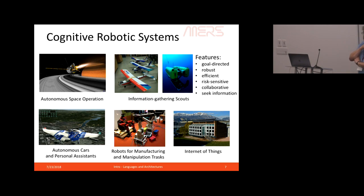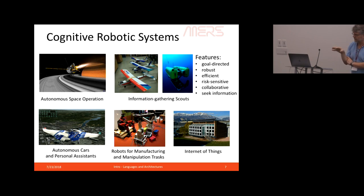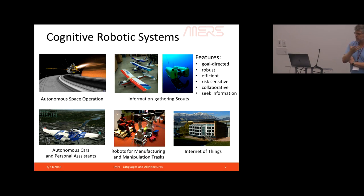The top-level goals come from the human — the operator, user, or programmer. One planner will sketch things out at one level of abstraction and call other planners to elaborate. The architecture ends up being a hierarchy of planning systems at many different levels of abstraction, passing down goals from one planner to the next. The coordination between those planners in terms of goals is really key.